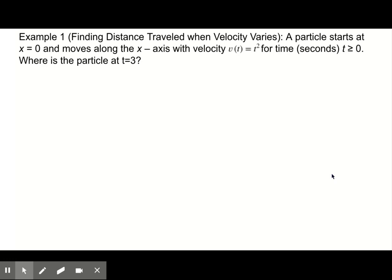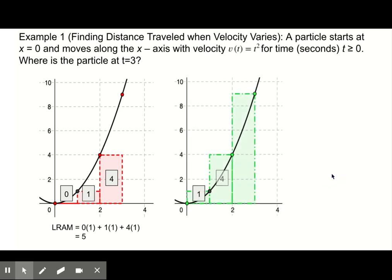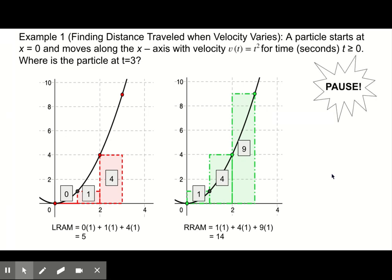Let's look at both the left and right rectangular methods and compare them. We found the area of the left rectangular approximation to be five. Would this approximation be an underestimate or overestimate? Because the rectangles do not completely fill the area under the curve, the left sum would be an underestimate. Since one is an underestimate and the other an overestimate, a better estimate may be the average of the two. Pause the video to find the average of the two estimates and record it on your capture sheet. The average is 19 halves, or 9.5.